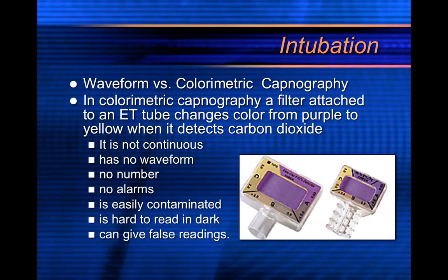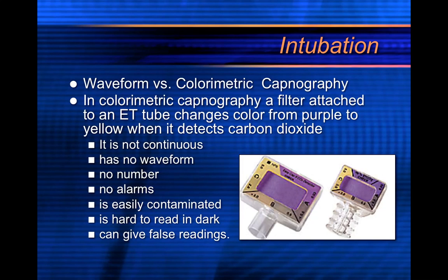Waveform versus colorimetric capnography — they are worlds apart. In colorimetric capnography, a filter attached to the ET tube changes color from purple to yellow to detect the presence of carbon dioxide. It's like litmus paper. It is not continuous, has no waveform, no number, no alarms, is easily contaminated, hard to read in the dark, and can give false readings. Those of us who've gotten waveform capnography might not even put colorimetric devices on BVMs anymore because they're almost useless.